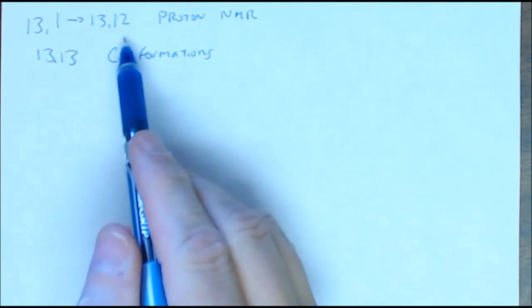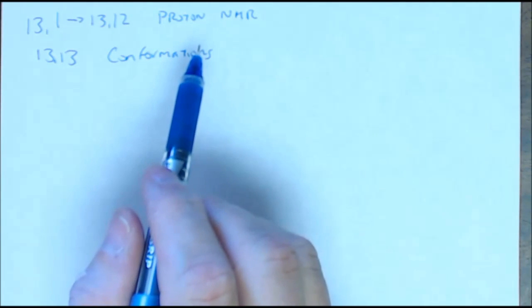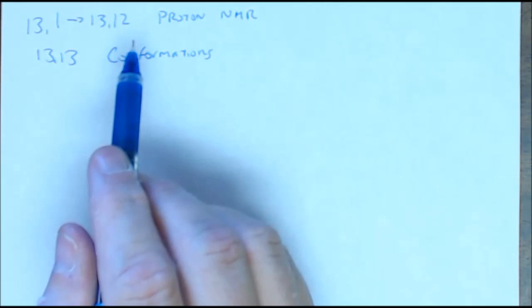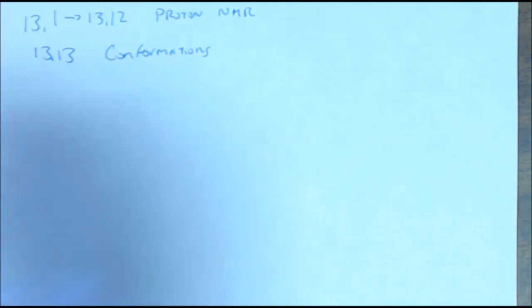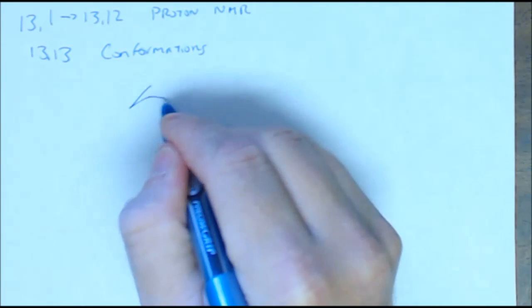All right. Now, so far, we've gone through 13.1 through 13.2. We've covered a lot of different things with proton NMR. One of the last few things that I'm going to cover with proton NMR is something called conformations. Now, you've seen this before.